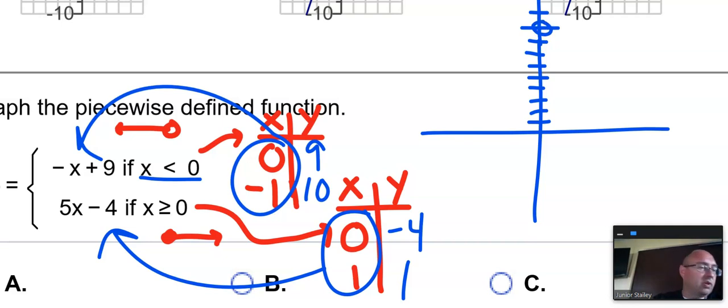So 0, 9, and we know that's going to be an open circle. 0, 9 is an open circle. And negative 1, 10, all right? So that's going to be up here. So that's going to be the arrow left portion.